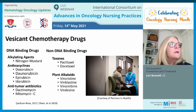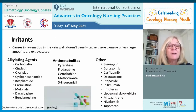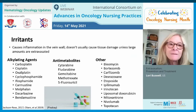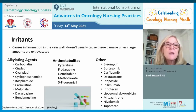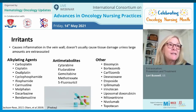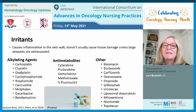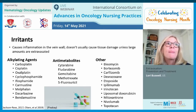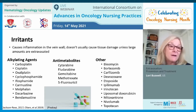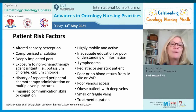All nurses should be acutely aware of what are vesicants and what are irritants. There are a lot of chemotherapy drugs classified as irritants — they cause inflammation in the vein wall. They usually don't cause tissue damage unless a large amount extravasates. But if a patient is getting carboplatin or dacarbazine — dacarbazine is particularly irritating — and they complain of pain or burning at the site, you want to pull that IV and start another one in the other arm or higher up.